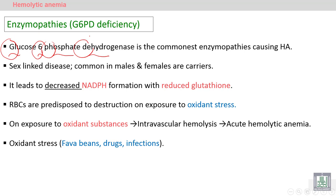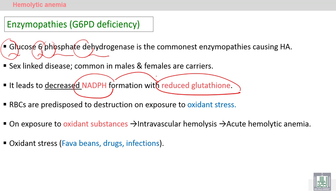Deficiency of this enzyme — whether quantitative or qualitative — leads to a decrease in the very important substances NADPH and reduced glutathione. NADPH and reduced glutathione are essential for RBCs to live their complete lifespan of 120 days, and to protect the RBCs against oxidant stress.